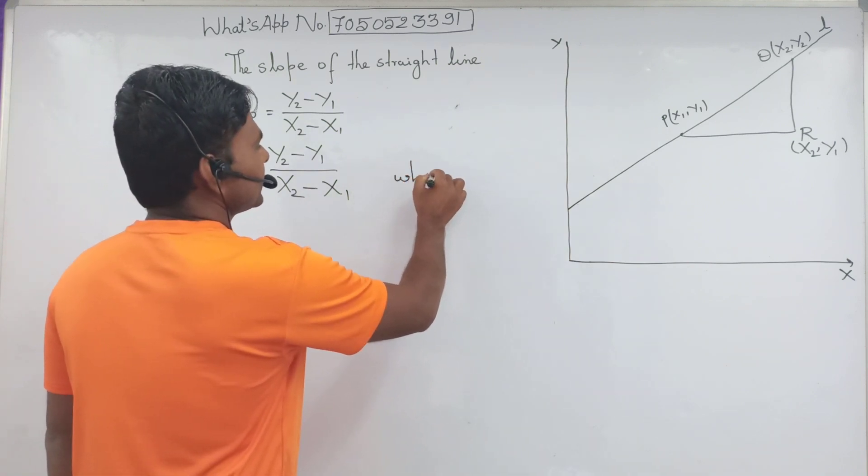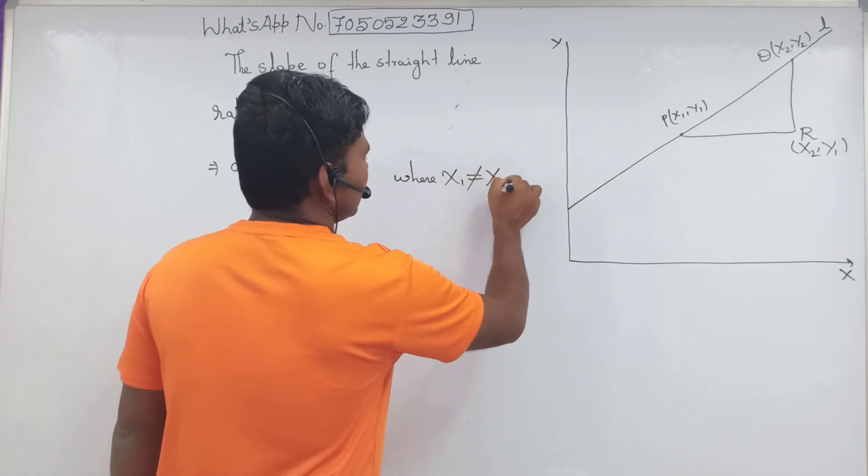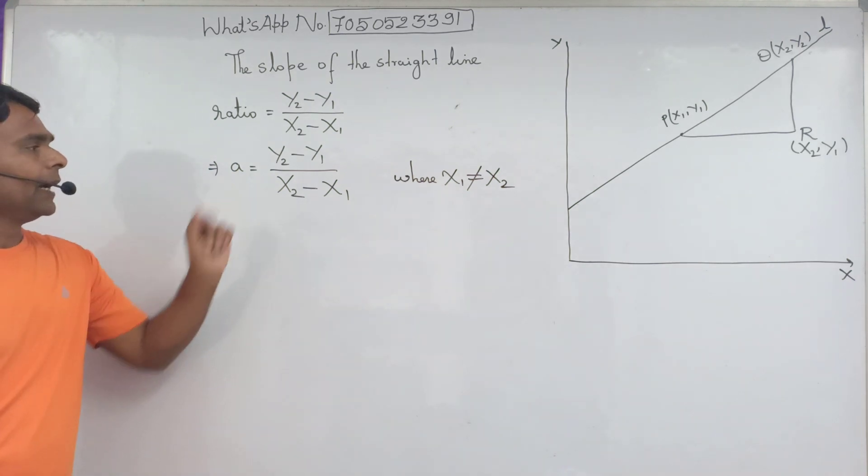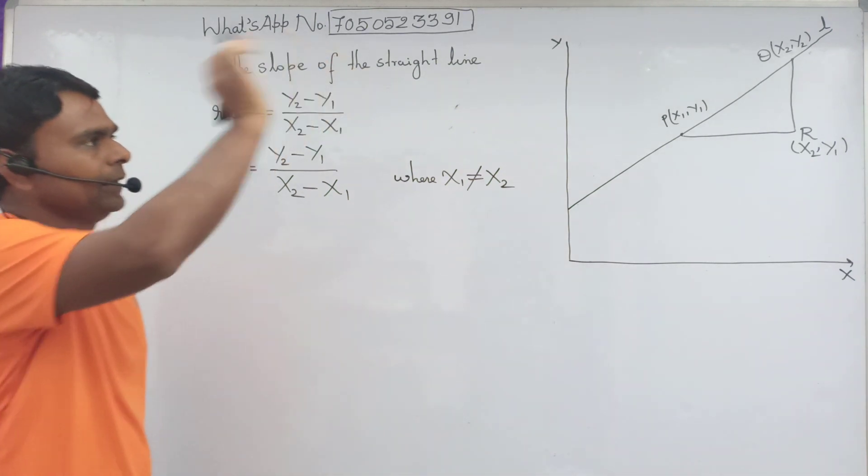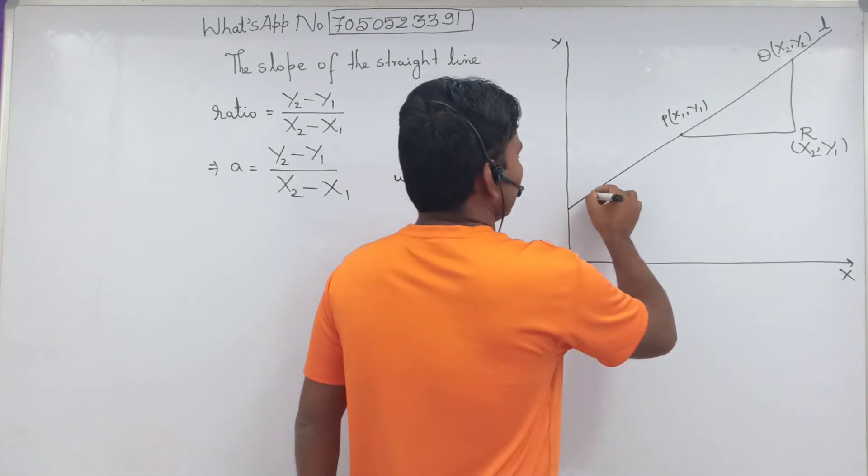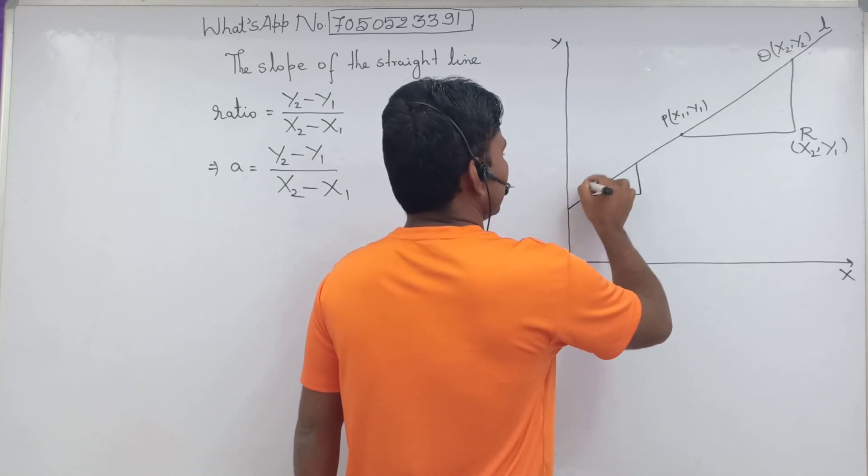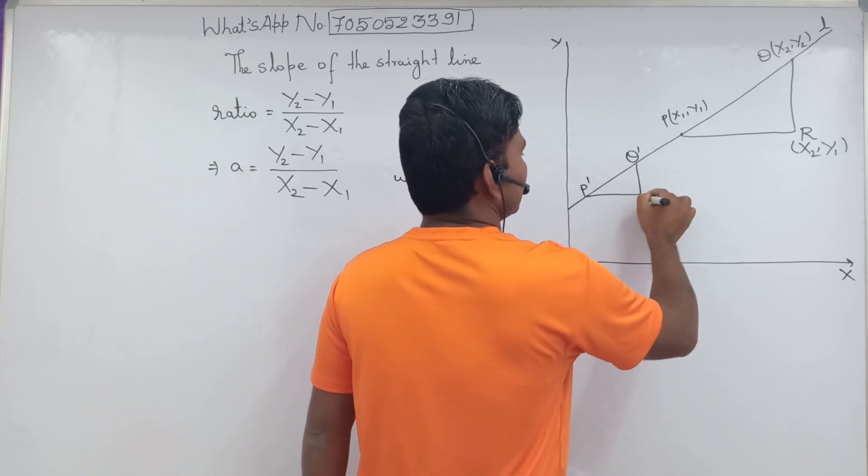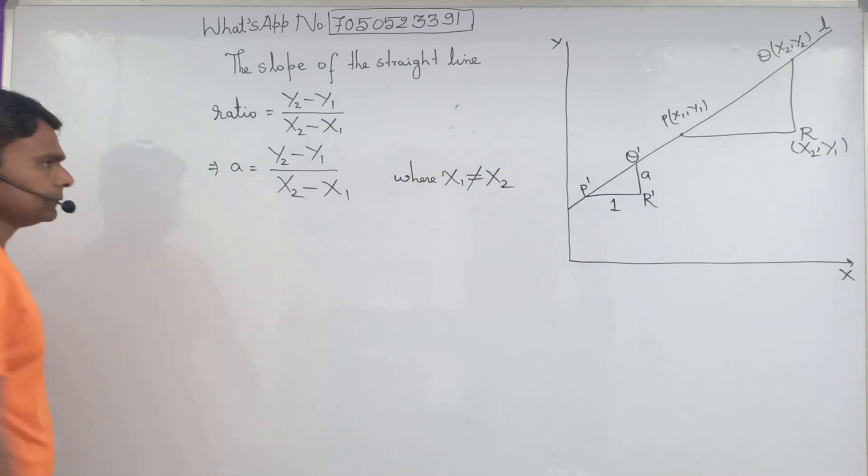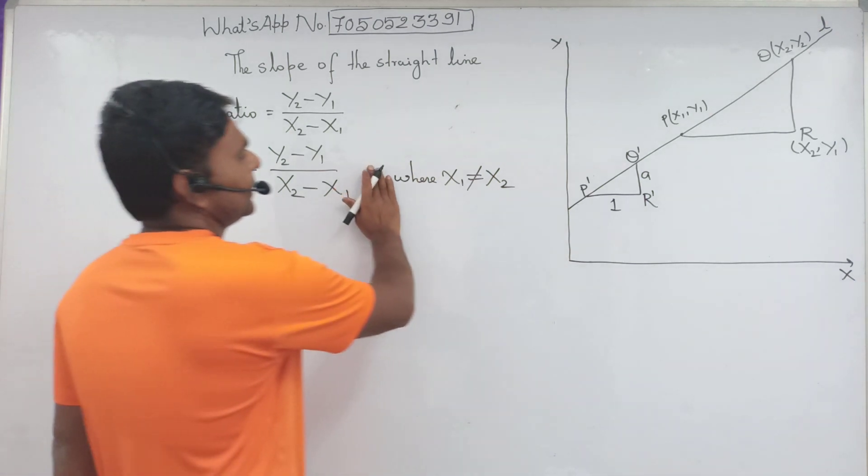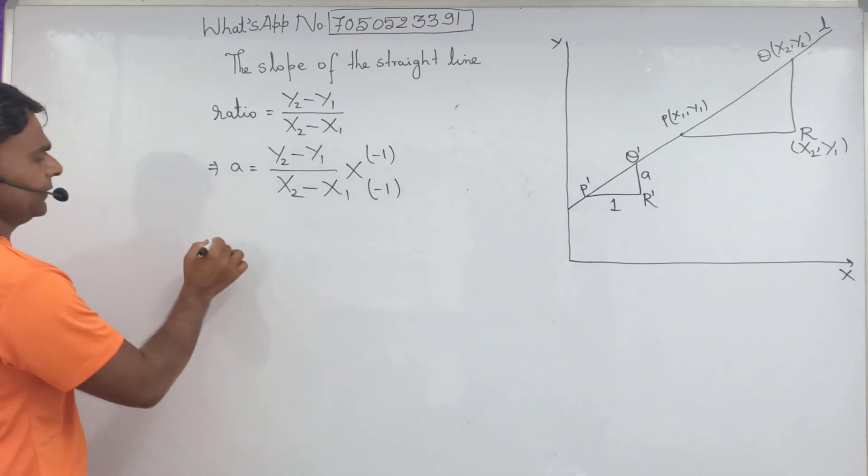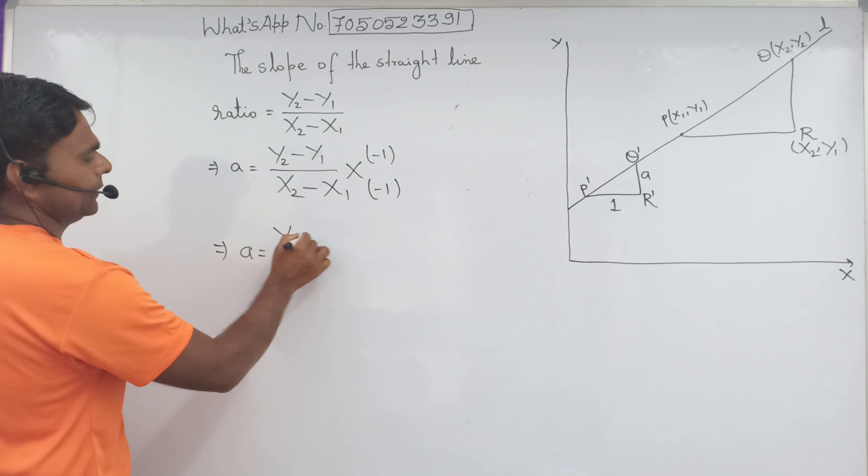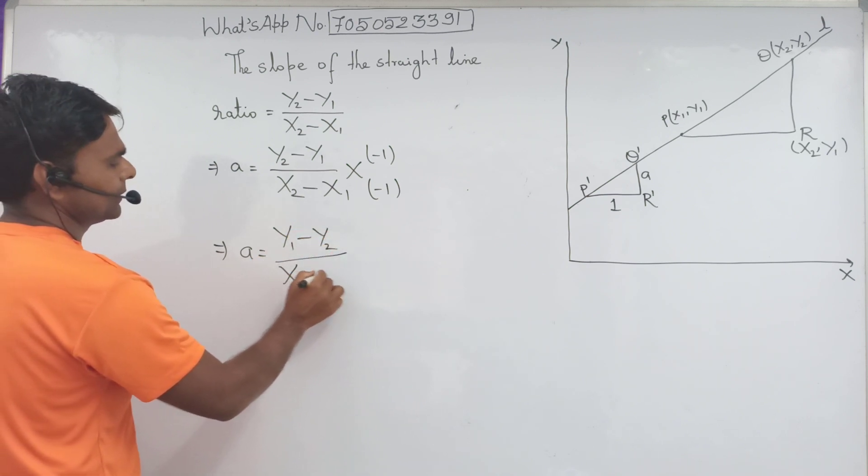Here x1 doesn't equal to x2. This is the slope of a straight line, and coordinate points x1, y1 and x2, y2 are two distinct points on line L. If we multiply both the numerator and denominator by minus one of the fraction, we obtain A equal to y1 minus y2 over x1 minus x2.